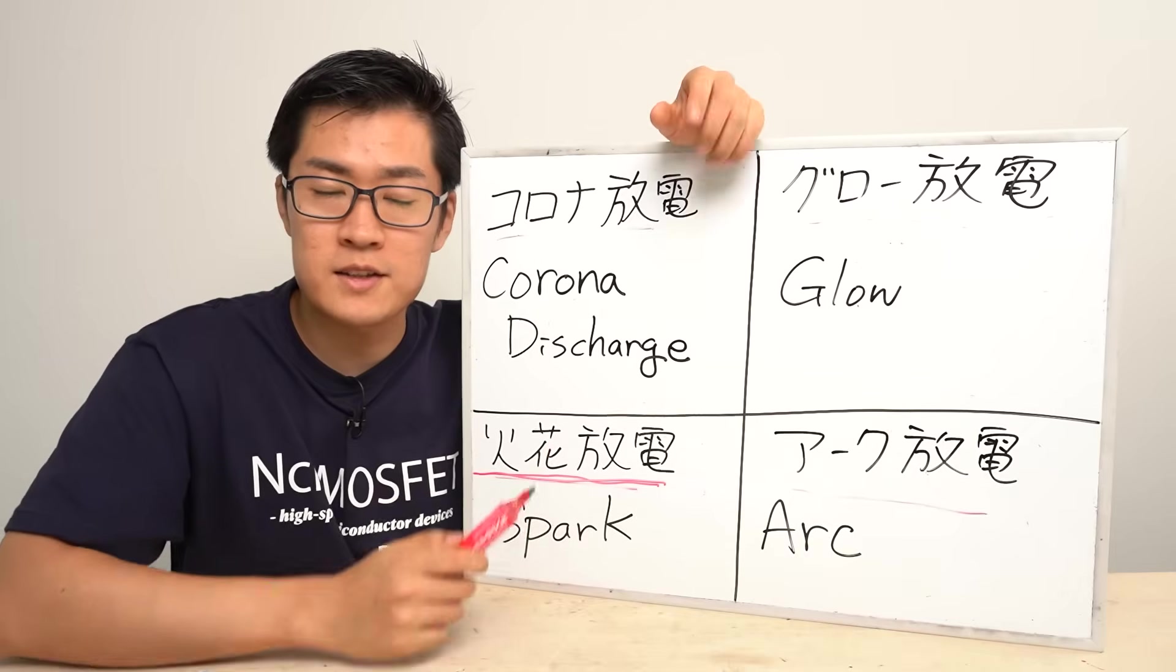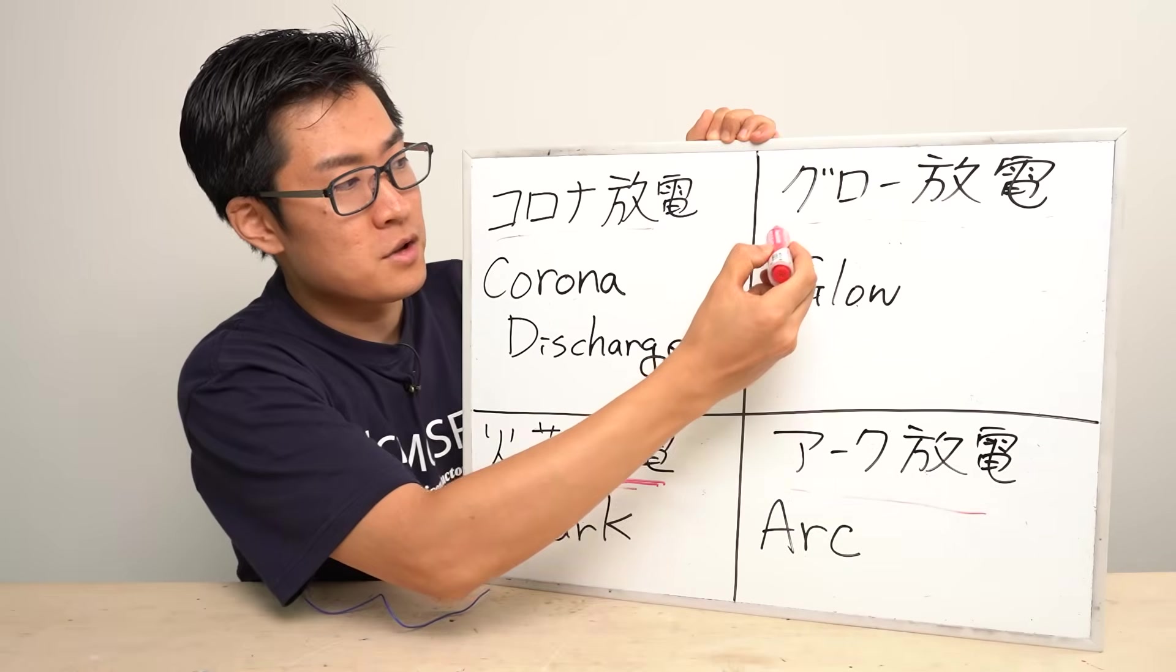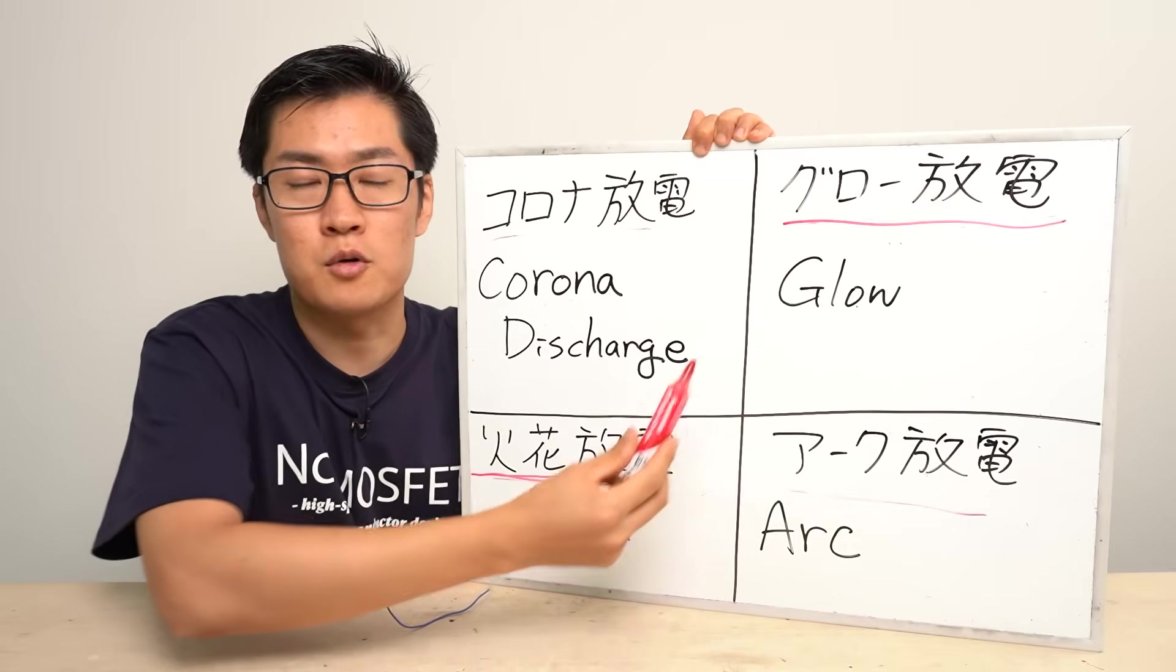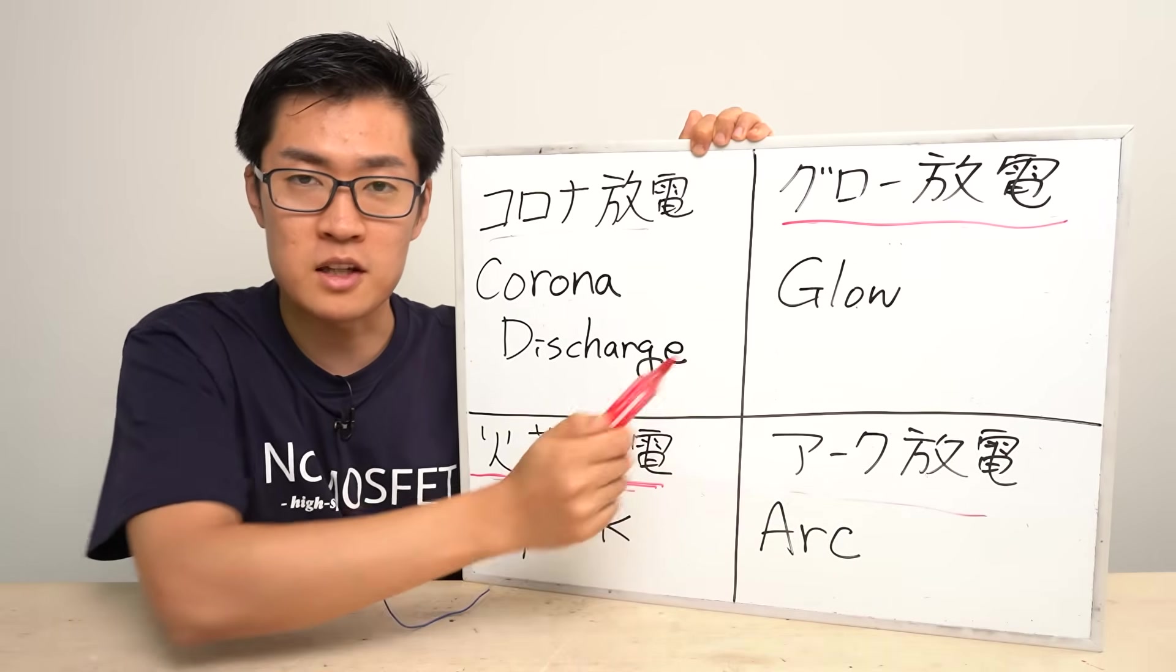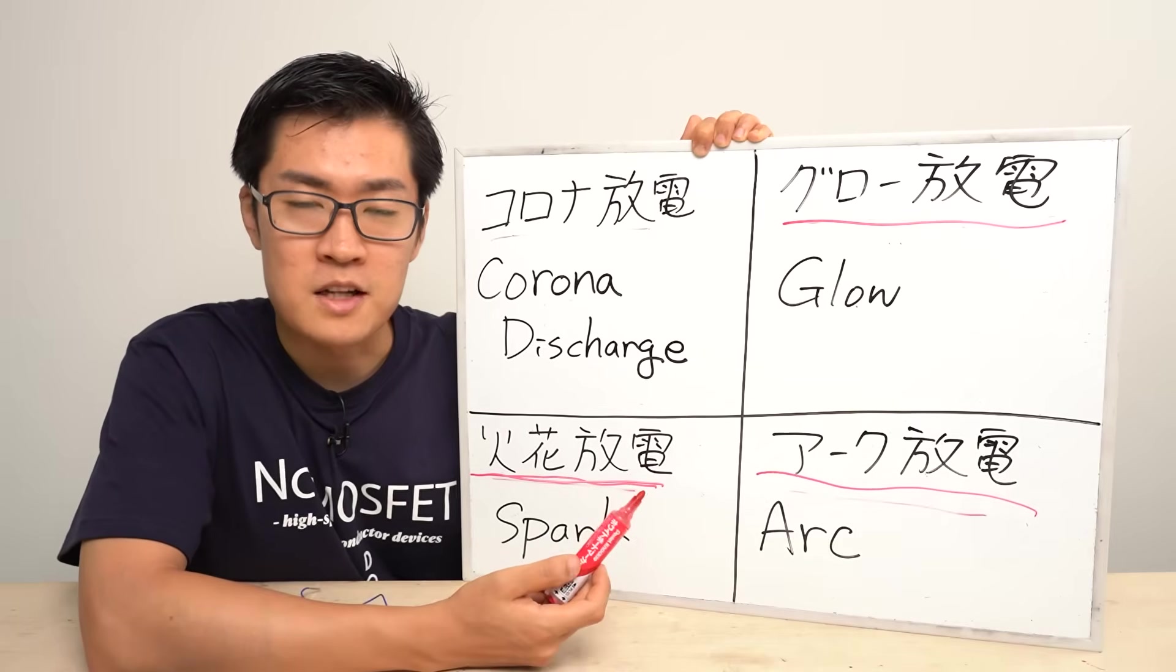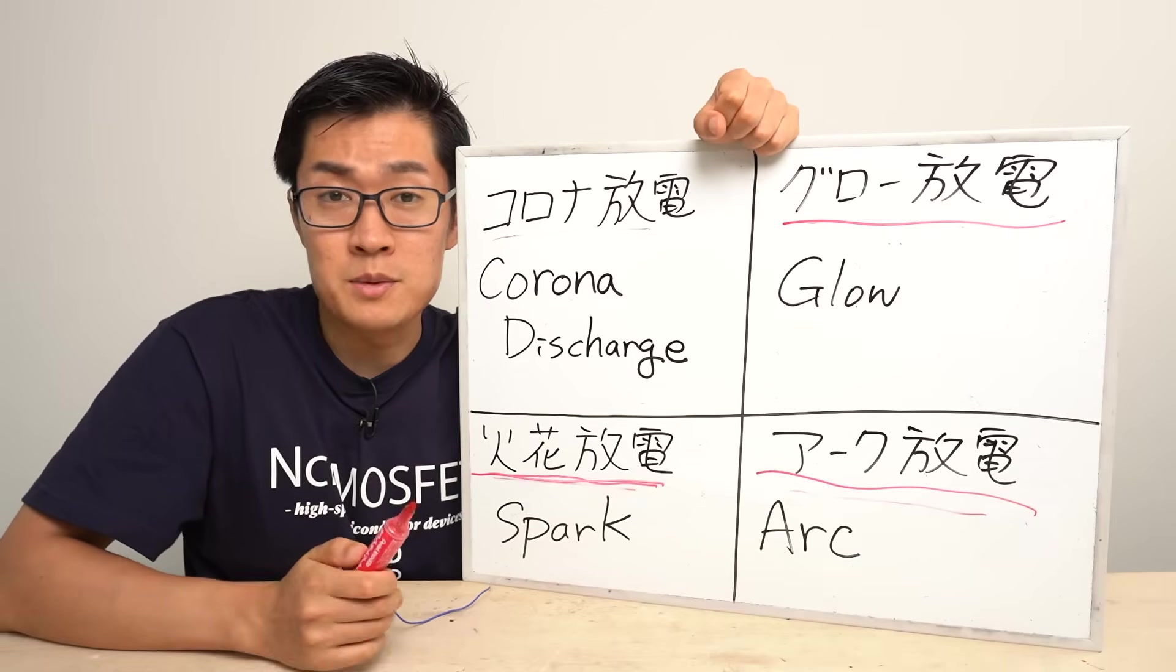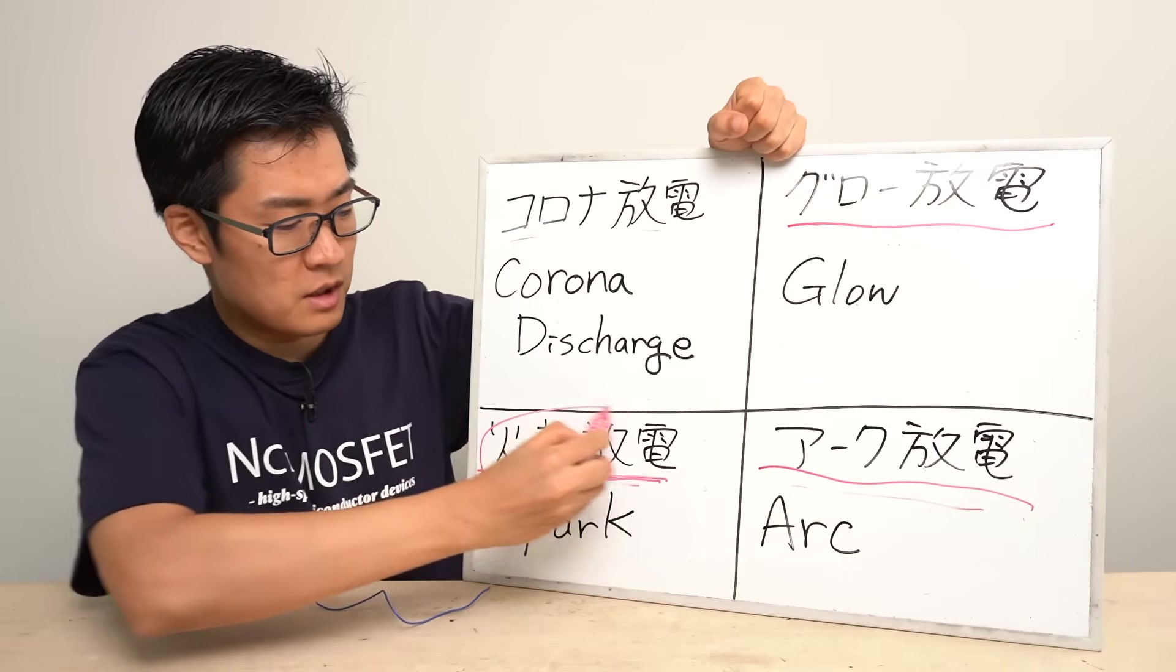Next is spark discharge. It refers to instantaneous discharges like static electricity and lightning. Next is glow discharge. This is a discharge used in fluorescent lamps and similar devices. It's a continuous discharge. And finally arc discharge. It's an extremely high temperature discharge used in processes like arc welding. Among these types, the type of discharge caused by the Wimshurst machine is a spark discharge.